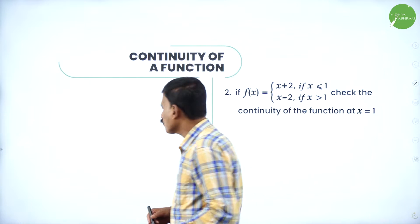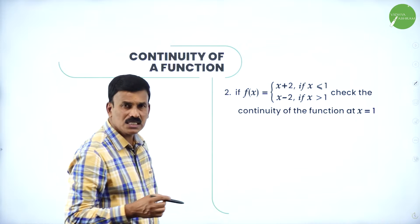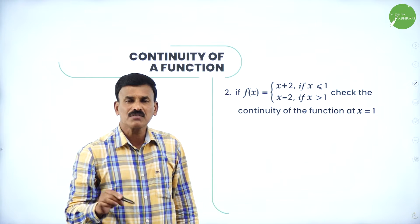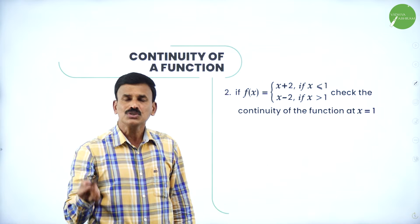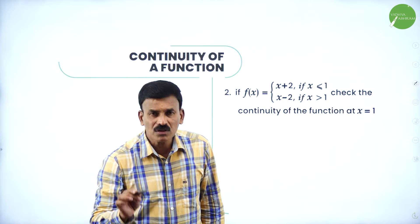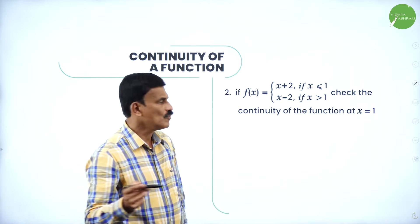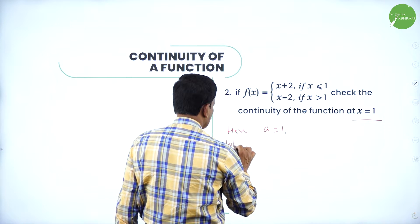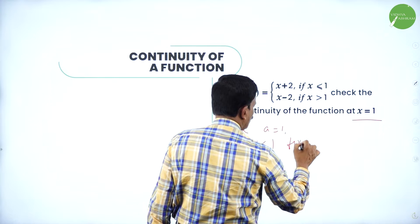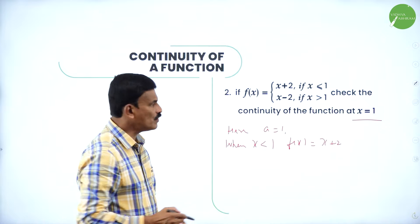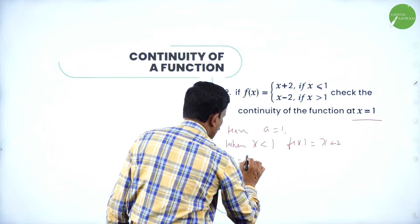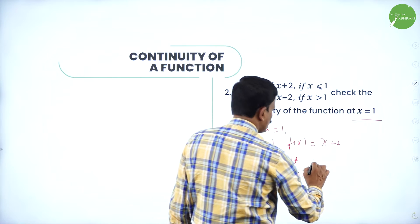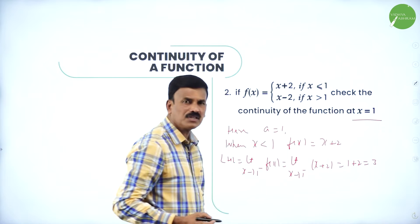Next problem: f(x) = x + 2 if x ≤ 1, and x − 2 if x > 1. Check continuity at x = 1. Here a = 1. When x < 1, f(x) = x + 2, so the left hand limit = limit as x→1⁻ of (x + 2) = 1 + 2 = 3. When x > 1, f(x) = x − 2, so the right hand limit = limit as x→1⁺ of (x − 2) = 1 − 2 = −1.